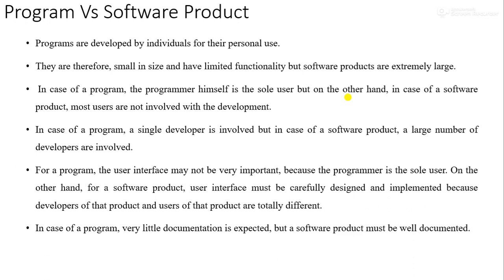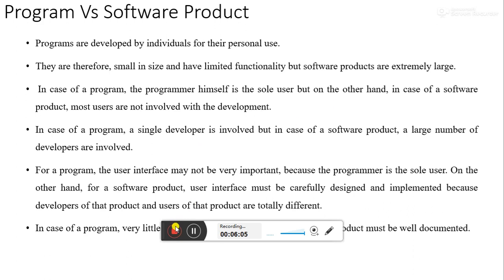A software product consists of program code, documentation, and user manuals, whereas a program only contains lines of code. This is the major difference between a program and a software product. In the next video, we are going to learn what different types of software development lifecycle models are available, and we will study them in detail in our upcoming videos. Thank you very much.